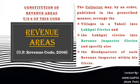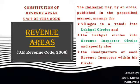According to Section 6 of this code, the Collector may by an order published in the prescribed manner arrange the villages in a tahsil into lekhpal circles, and lekhpal circles into revenue inspector circles, and also specify the headquarters of each revenue inspector within its circle.